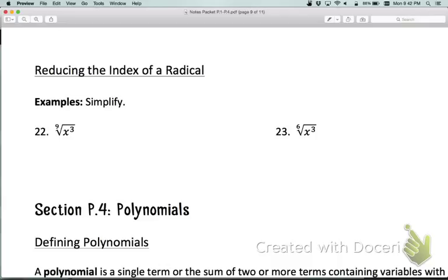The way that we would do this is by first converting it into exponent form. So this would be x to the - remember we're going to have the numerator and the denominator of the fraction. The denominator is the index, so that's going to be 9. The exponent that you use is going to be the numerator.